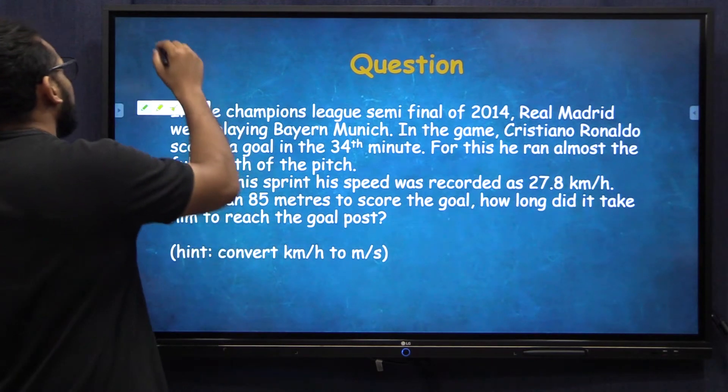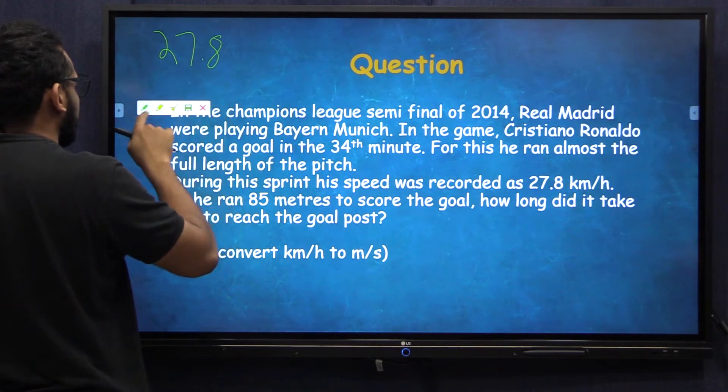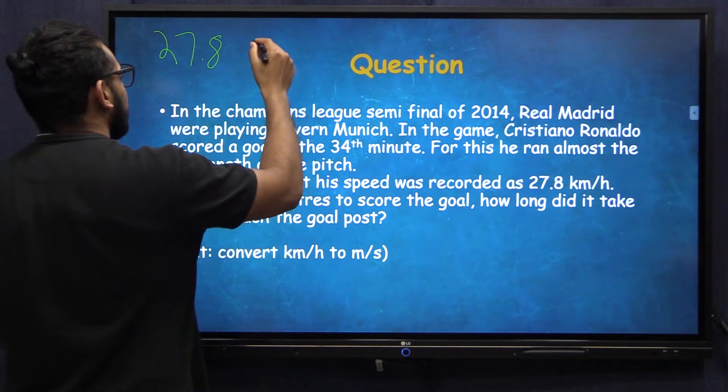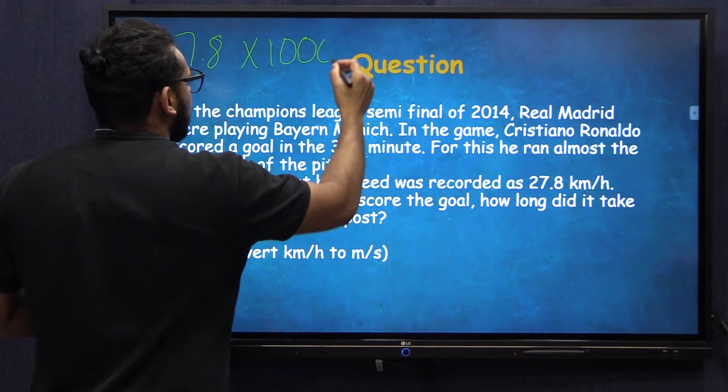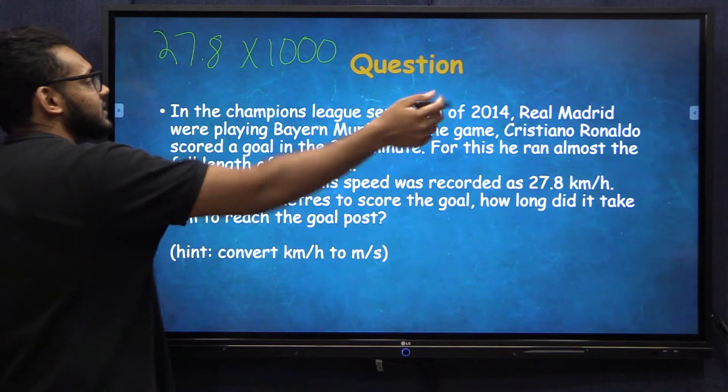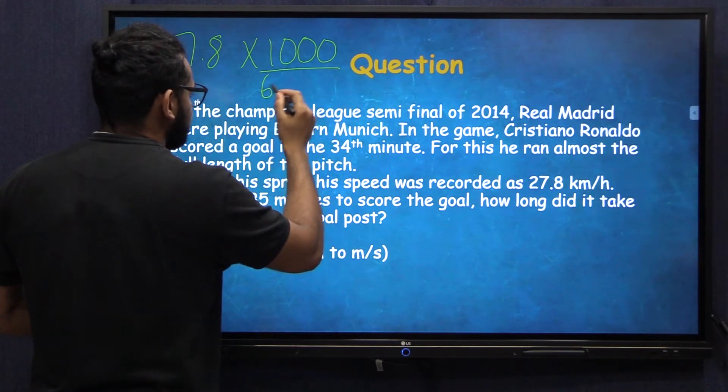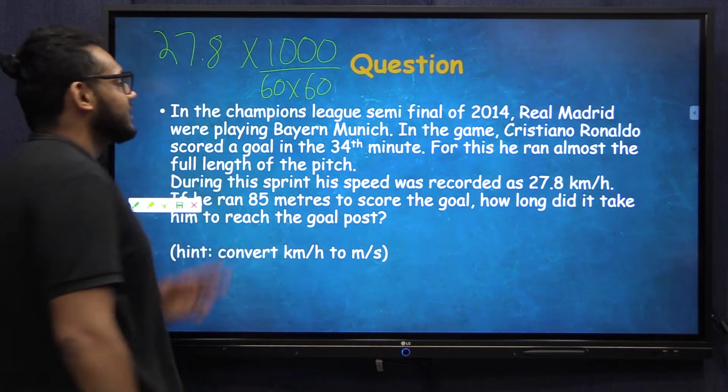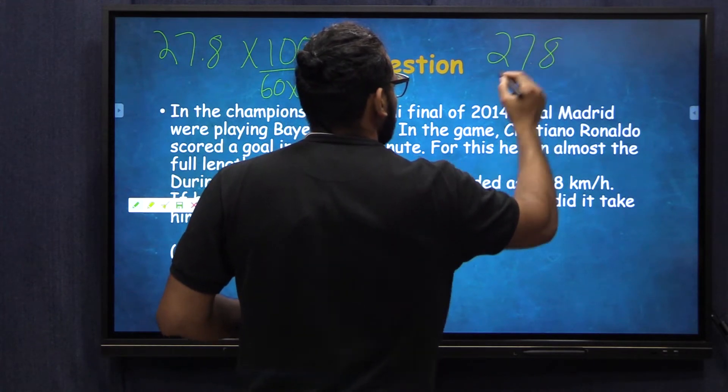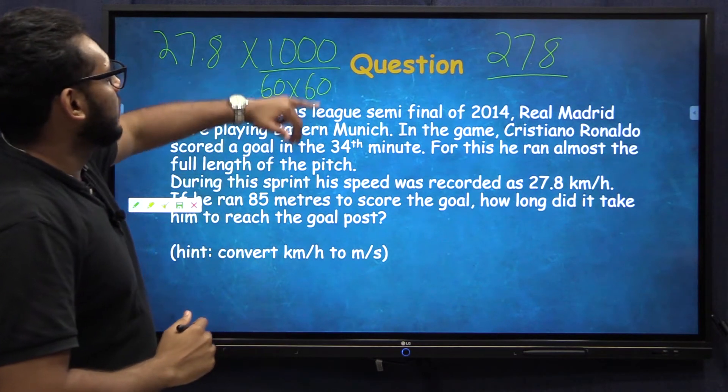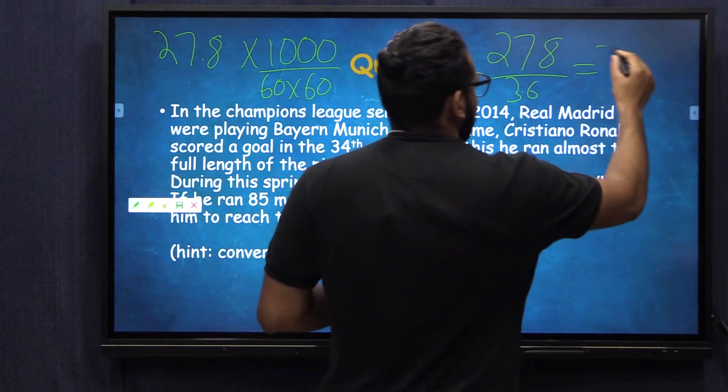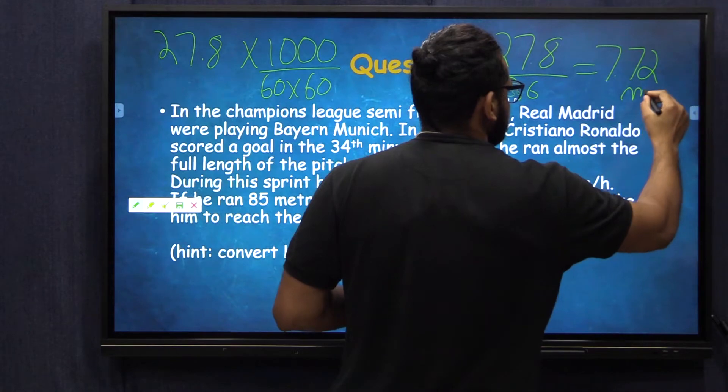I'm going to give you a second to try it yourself. Let's look at this in a simple way. We know that the speed is 27.8 kilometers per hour. Now how do we convert this into meter per second? One kilometer is how many meters? It is 27.8 into 1000. Now this is how many meters per hour he was traveling. Now we don't want meter per hour, we want meter per second. So how many seconds is an hour divided? We know that 60 seconds is a minute and we know that 60 minutes is an hour. 60 into 60 is 3600. Now if you look at that, that becomes 27.8 divided by 3.6 which is 7.72 meters every second.